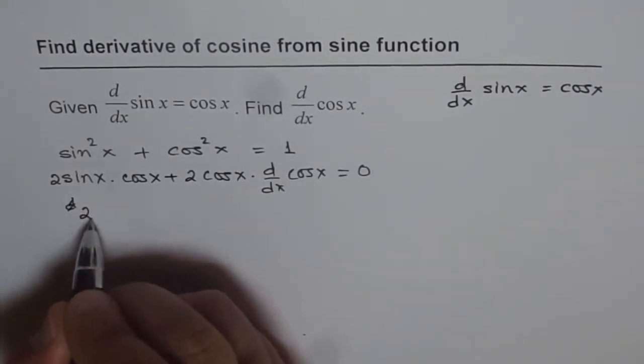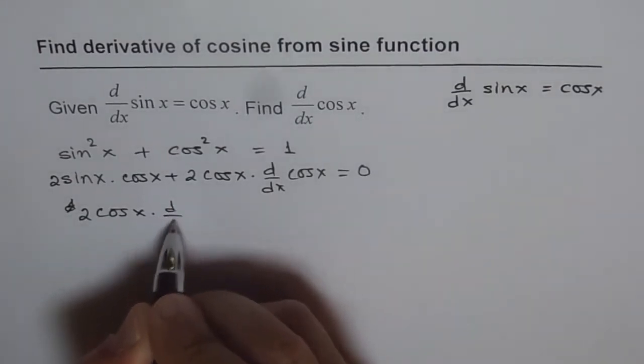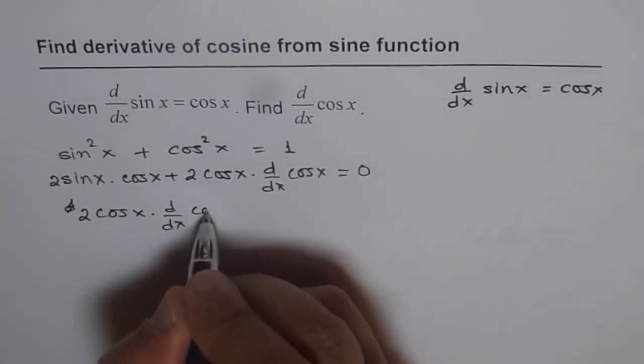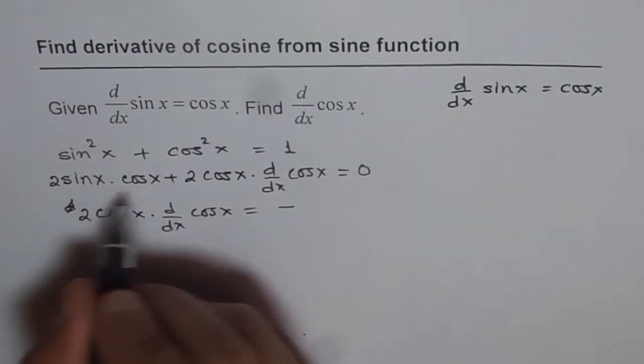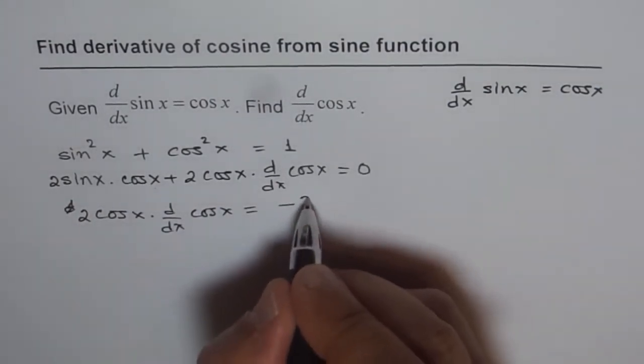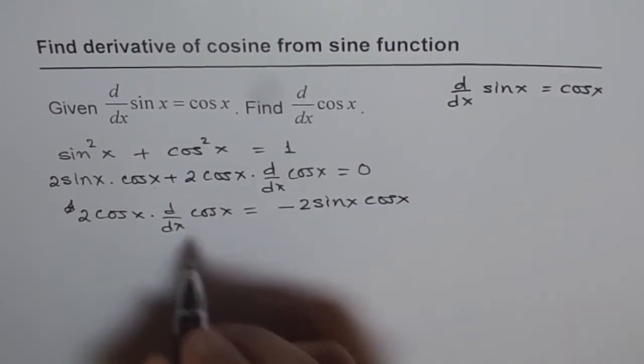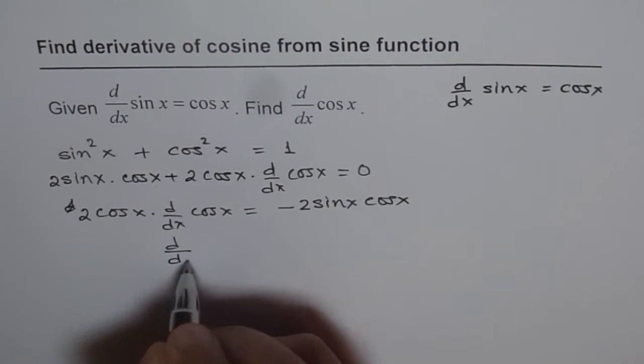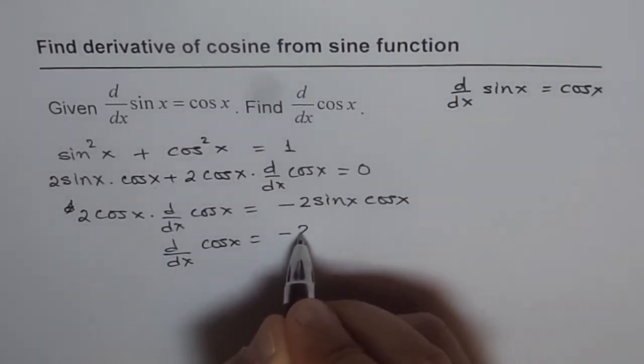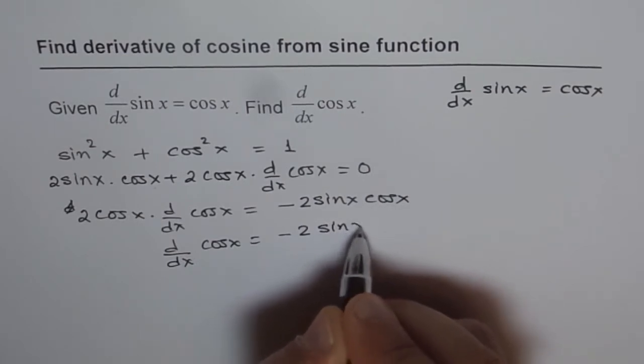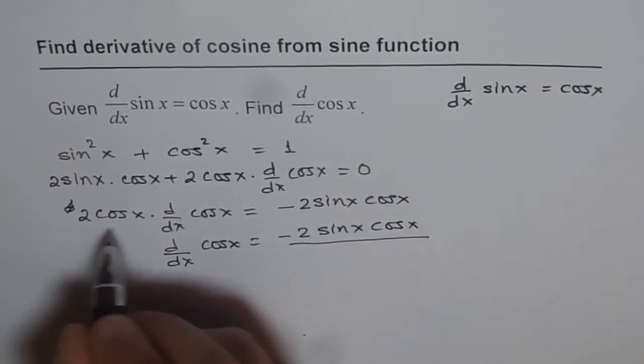we'll write 2 cos x d/dx of cos x equals to minus 2 sin x cos x. And now d/dx of cos x is equal to minus 2 sin x cos x divided by 2 cos x.